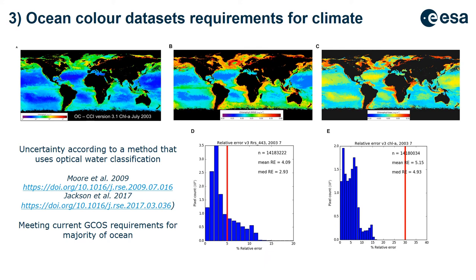Based on maps of uncertainty derived using optical classification methods, every satellite observation at a pixel comes with an estimate of uncertainty — root-mean-square difference and bias. We can look at these maps of uncertainty to determine whether satellite products are meeting the GCOS requirements. Results from the Ocean Colour Climate Change Initiative suggest they are for the majority of cases.